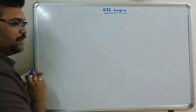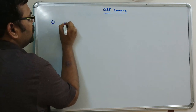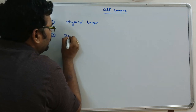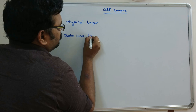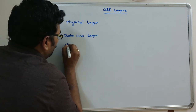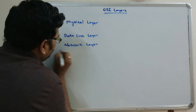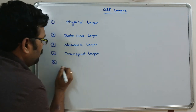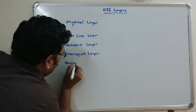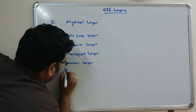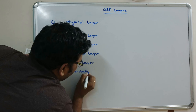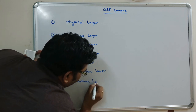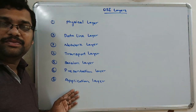Now we will see the seven-layer architecture. The first one is the physical layer, then the data link layer, network layer, transport layer, session layer, presentation layer, and finally the application layer. These are the seven-layer architecture developed by ISO.